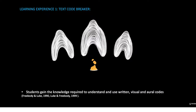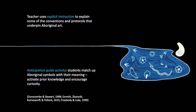The first learning experience utilises the practice of text code breaking. To act as code breakers, students need to be able to break down and understand the basic codes and elements that make up a text. To begin, the teacher will use explicit instruction to explain some of the conventions and protocols that underpin Aboriginal art. This background knowledge will help students better understand the animation.